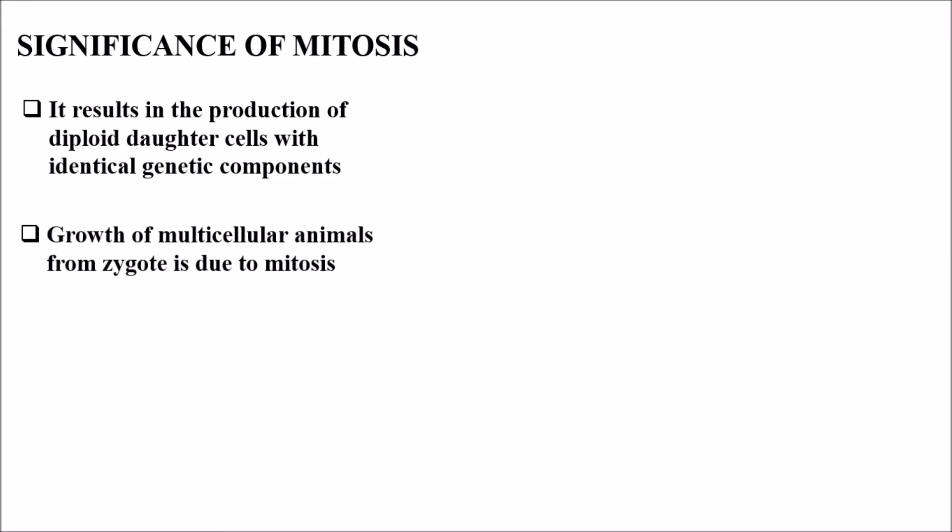Growth of multicellular organisms from zygote to a fully developed organism is due to mitosis. It also helps to restore the nucleocytoplasmic ratio — the nucleus content, nucleolus content, RNA, DNA, and the cytoplasmic ratio are all maintained by mitosis.